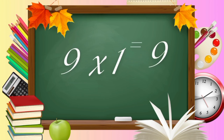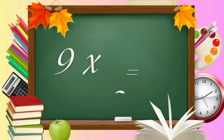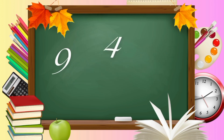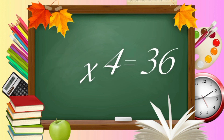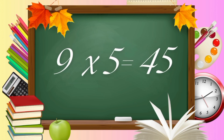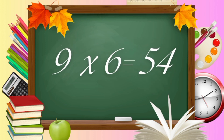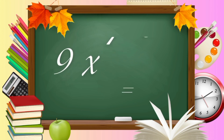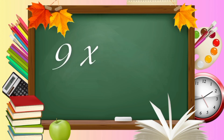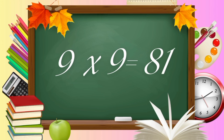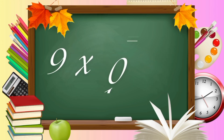9 ones are 9. 9 twos are 18. 9 threes are 27. 9 fours are 36. 9 fives are 45. 9 sixes are 54. 9 sevens are 63. 9 eights are 72. 9 nines are 81. 9 tens are 90.